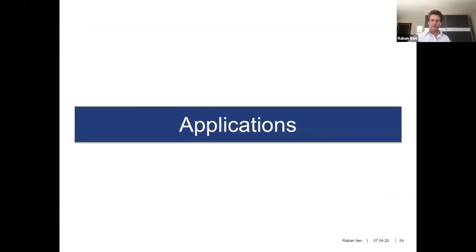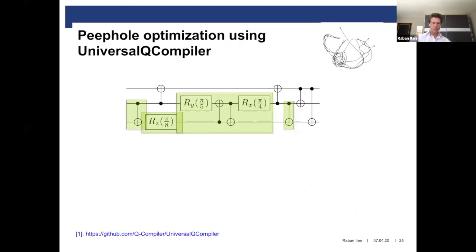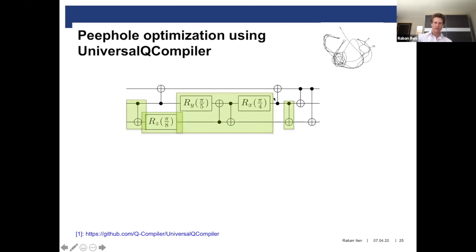Let me now point out an interesting application of this algorithm apart from template matching. The application is peephole optimization. Instead of searching for a match of a template, we are given a circuit and we choose just some of the qubits — usually a small number like two or three. Then we search for the maximum gate sequence on these qubits that does not interact with any other qubits, allowing for pairwise gate commutation. In the example here, we have a circuit with three qubits and we have chosen these two qubits. This CNOT gate can be commuted to the left, this can be commuted to the right, and this is the maximum sequence we can extract.